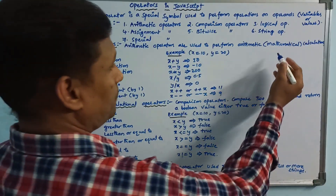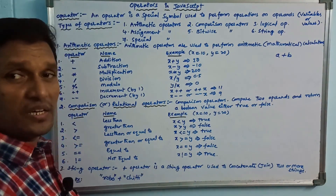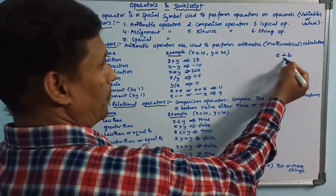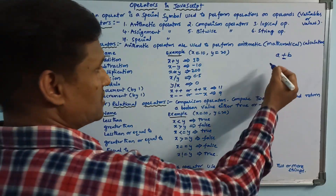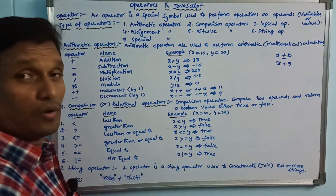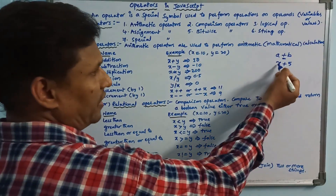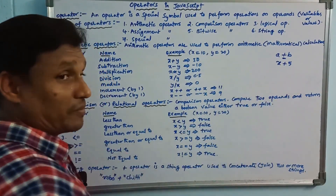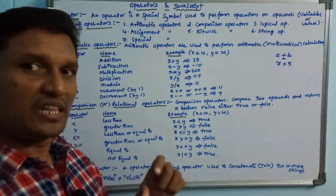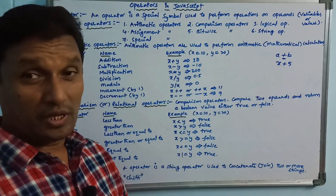For example, a plus b — here a and b are variables. For example, x plus 5 — one variable and one value. What is the name of these? Operands. Operands means either variables or values. In the middle, there is an operator.